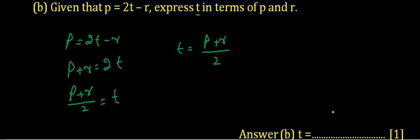Or you may write the answer as p plus r upon 2. So t equals p plus r upon 2 is the correct answer. Quite easy question. If there is any problem, you may write in the comments. I will reply shortly.